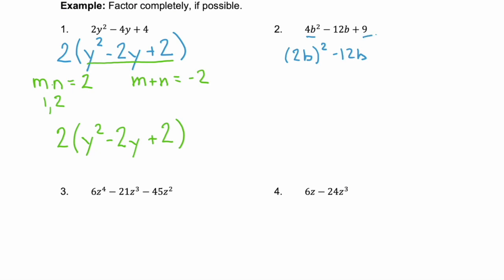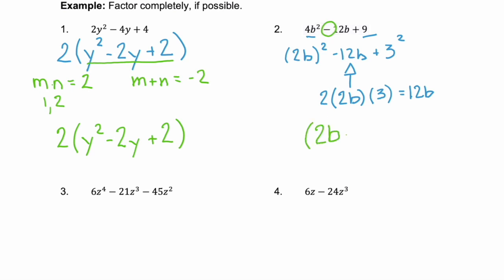And then that last term, 9, is the same as 3 squared. So if our middle term equals 2 times the root of the first term times the root of the third term — so 2 times 2b times 3, which is 12b — since 12b matches our middle term, we know we have a perfect square trinomial. Since it has a minus sign for the second term, it factors as (2b minus 3) squared.